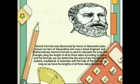Moving on to the next slide, we have discovery of Heron's Formula. Heron's Formula was discovered by Heron of Alexandria, also known as Hero of Alexandria, who was a Greek engineer and mathematician. Heron's Formula is used to calculate the area of a triangle using the length of its three sides. According to Heron and his formula, we can determine the area of any triangle, be it scalene, equilateral, or isosceles, with the help of the formula as long as we have the length of all three sides provided.